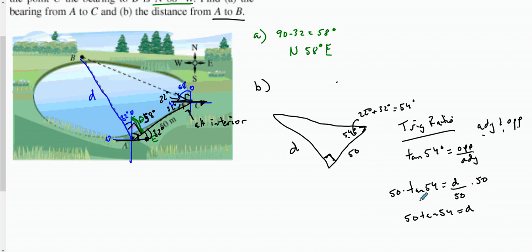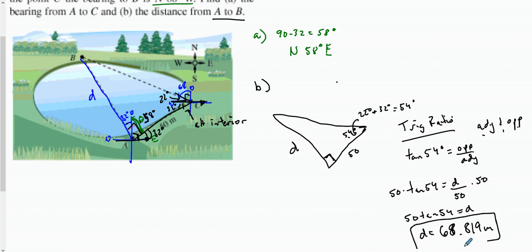Putting this in our calculator — 50 times tangent of 54 degrees, make sure your calculator is in degrees and not radians — d equals 68.819 meters. That is the distance from A to B.